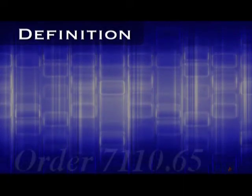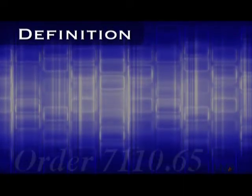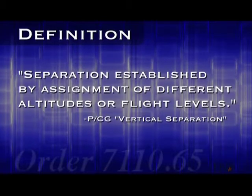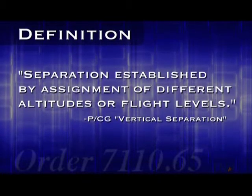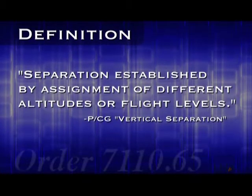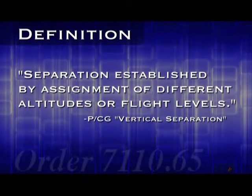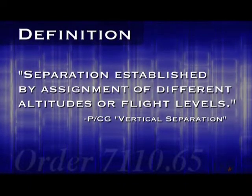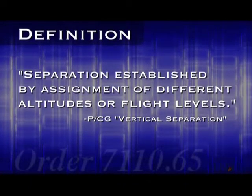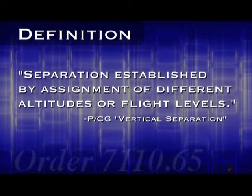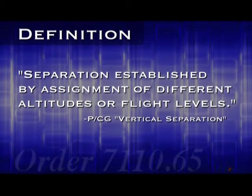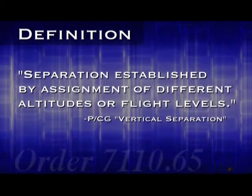The Pilot Controller Glossary defines vertical separation simply as separation established by assignment of different altitudes or flight levels. It sounds pretty simple, but as we'll see later, this is a tricky concept. There are a number of rules that go along with using this kind of separation, which are laid out in the 7110.65 in Chapter 5, Section 5.